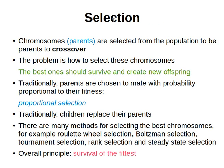We start with selection. How do we select candidate solutions, or chromosomes, or parents from a population to use them in crossover or mutation? Basically, what we want is to select the best ones so we can use them to create new offspring. Traditionally, parents are chosen to mate with probability proportional to their fitness.